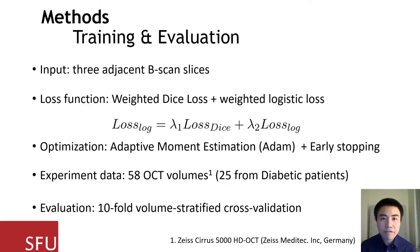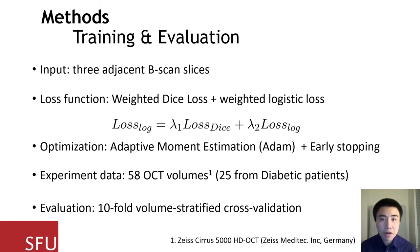In terms of training and evaluation, we use three adjacent B-scan slices as the initial network input. The loss is calculated as the sum of the weighted dice loss and the weighted logistic loss. Adaptive moment estimation, or ADAM, was used to control the learning rate for fast convergence. Training is stopped early if the accuracy ceased to increase up to five epochs to prevent overfitting. We evaluated our methods on 58 OCT volumes with 10-fold volume-wise stratified cross-validation.